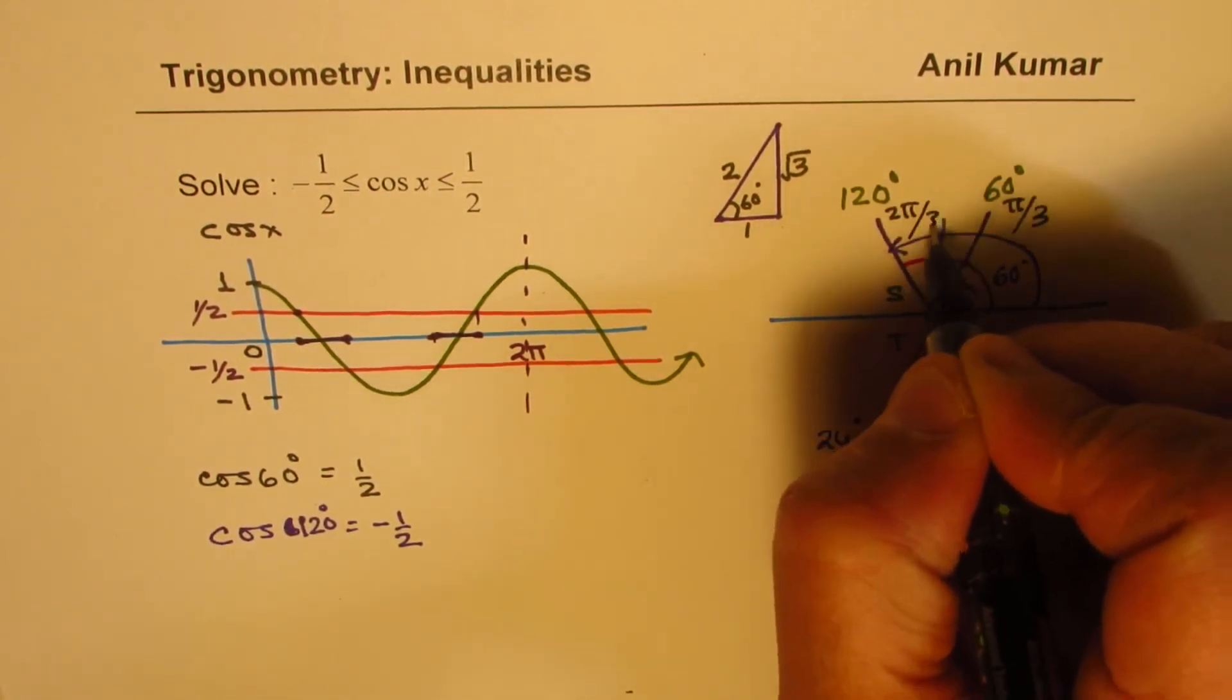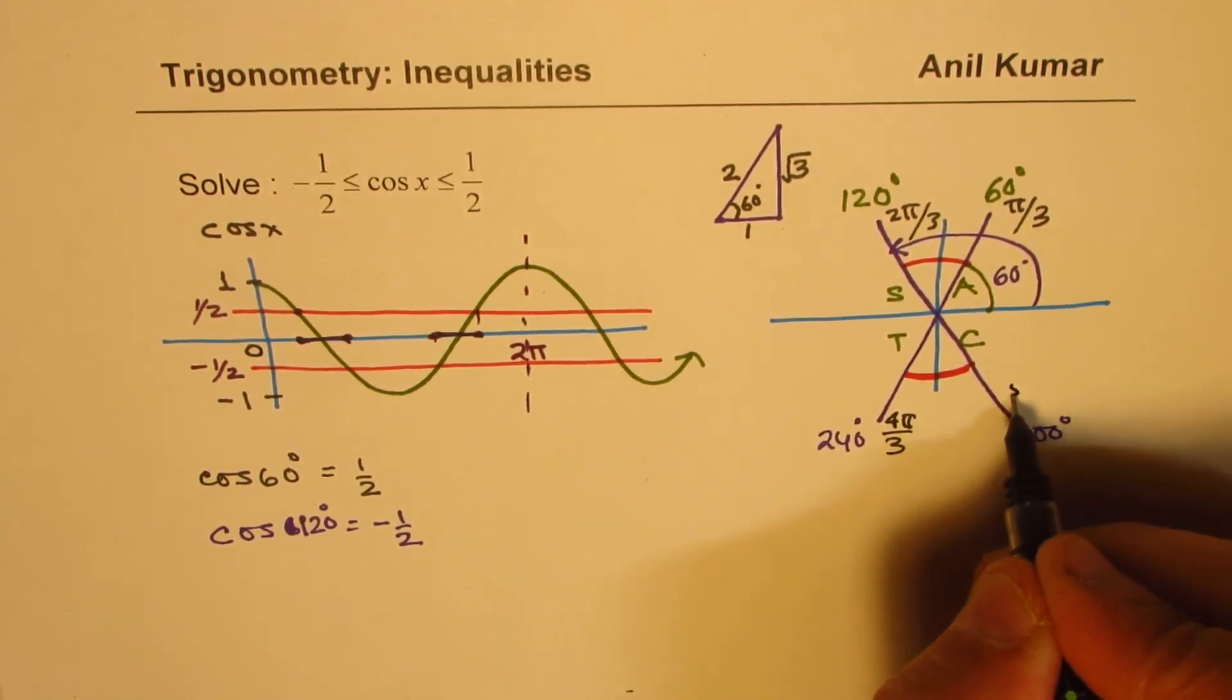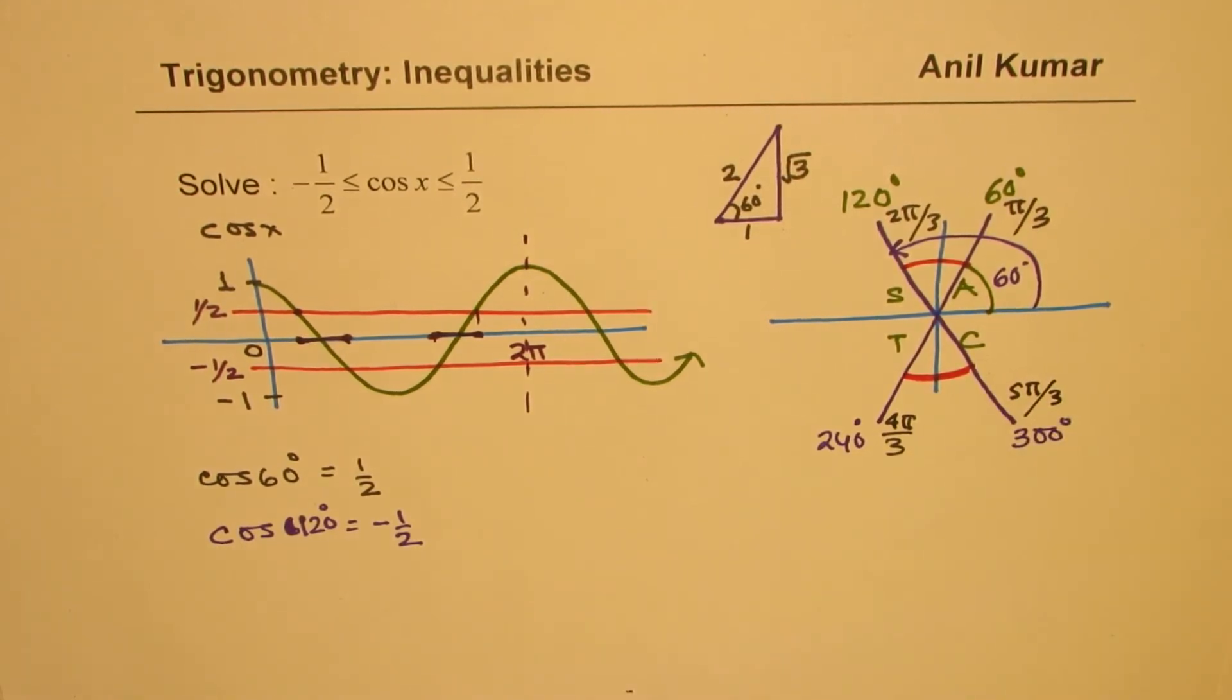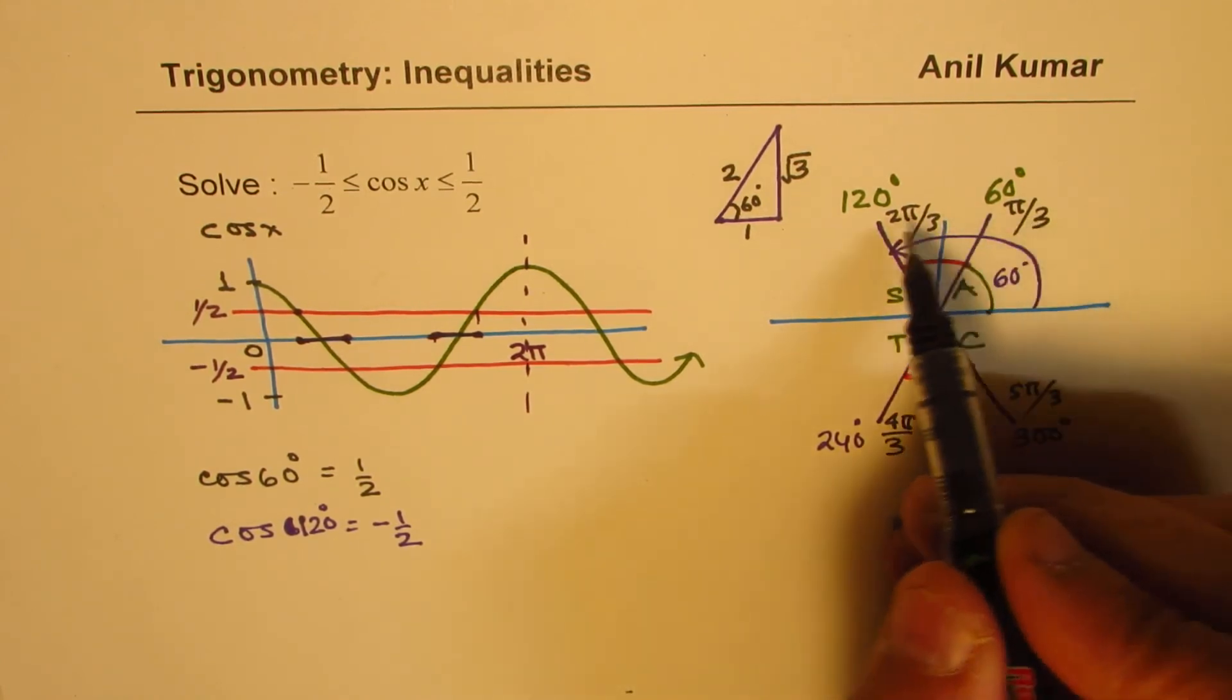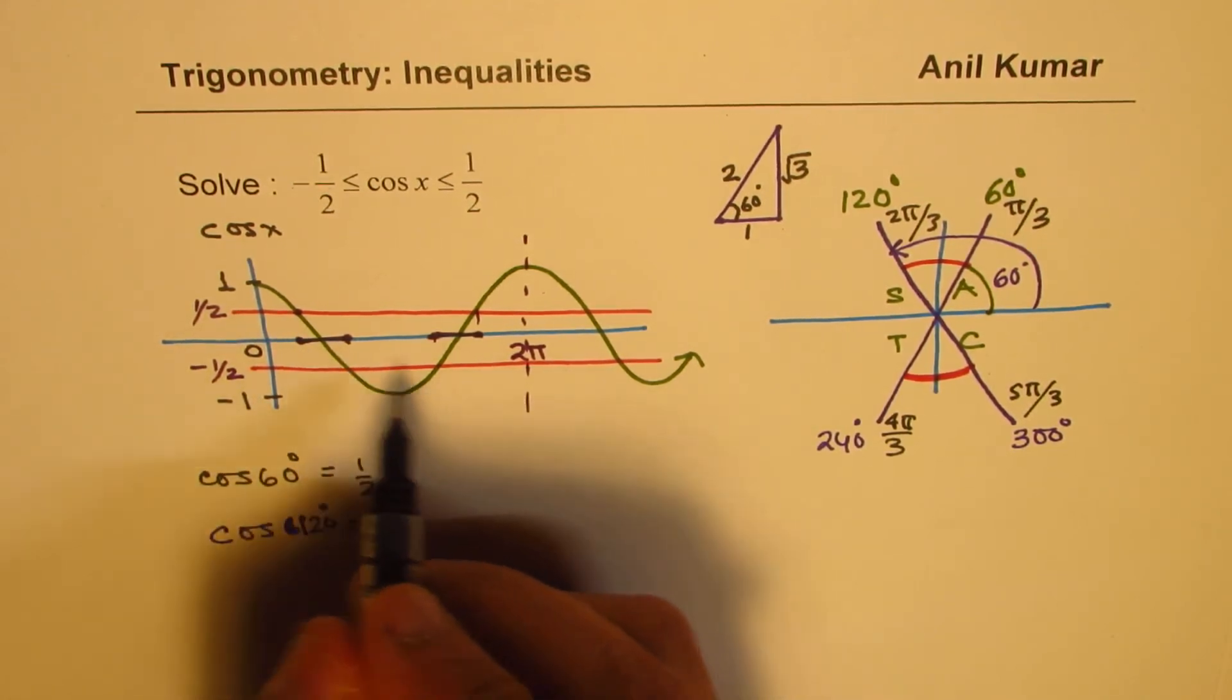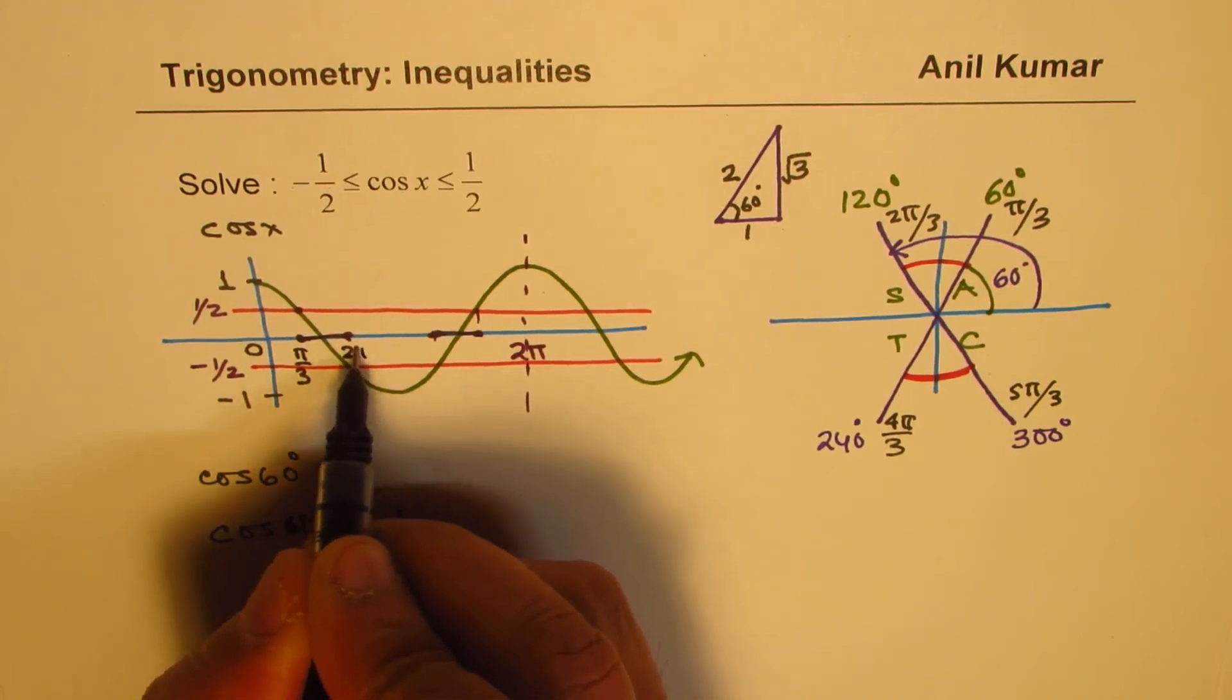But if you want to work in radians, you could write this as π/3, 2π/3. This is 3π/3. That becomes 4π/3. And this is 5π/3. In radians, that is going to be the result.